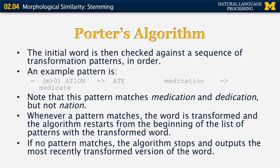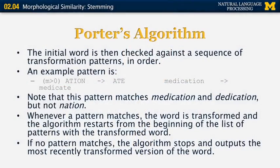Porter's algorithm starts by taking the word and checking it against a sequence of transformational patterns in order — it is a decision list where the rules are ordered. Starting from the beginning, the first rule whose left-hand side matches your current word representation is applied, and a certain transformation is made. For example, a rule can state: if the measure of the word is greater than zero, then '-ation' should be conflated to '-ate'. This would transform 'medication' to 'medicate' or 'dedication' to 'dedicate'.